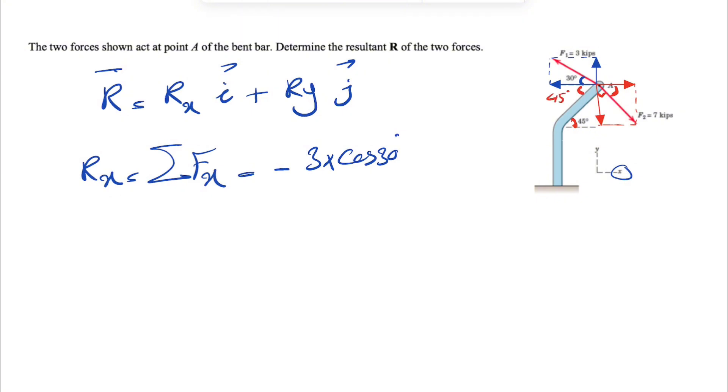We have this angle of 90 degrees, which means this has to be 45 degrees in order to get 180 for our horizontal line. Looking at the X component of F2, we can see it's along the positive X axis. So it will be plus 7 cosine of 45 degrees, and that's going to give us our Rx.